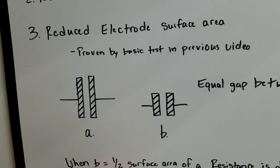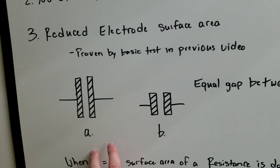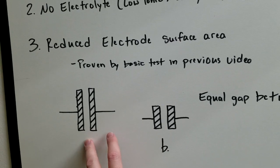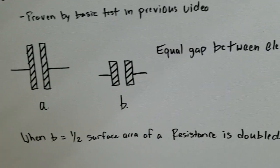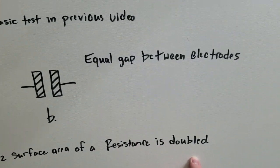So in my test in a previous video, I showed that when you have identical pairs of electrodes with the same gap between each one, if you reduce the surface area by one half, the resistance between the electrodes is doubled.